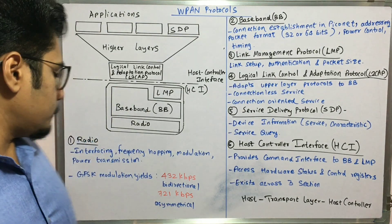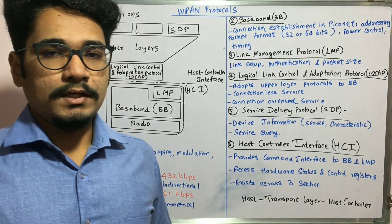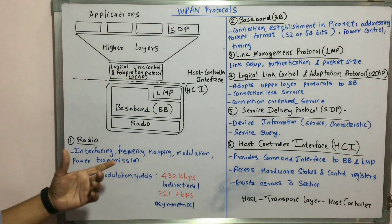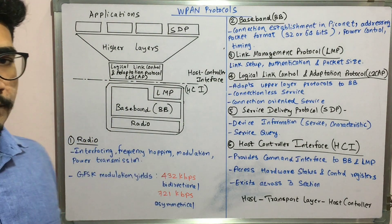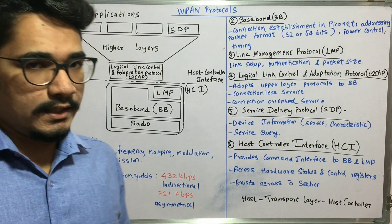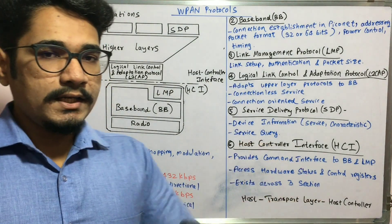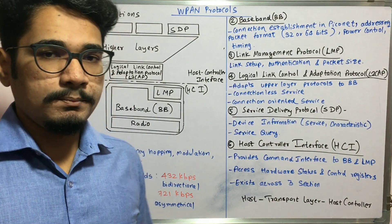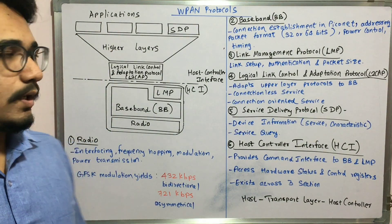The modulation used is GFSK, which is basically of two types: 432 kbps for bi-directional modulation and 721 kbps for asymmetrical modulation.